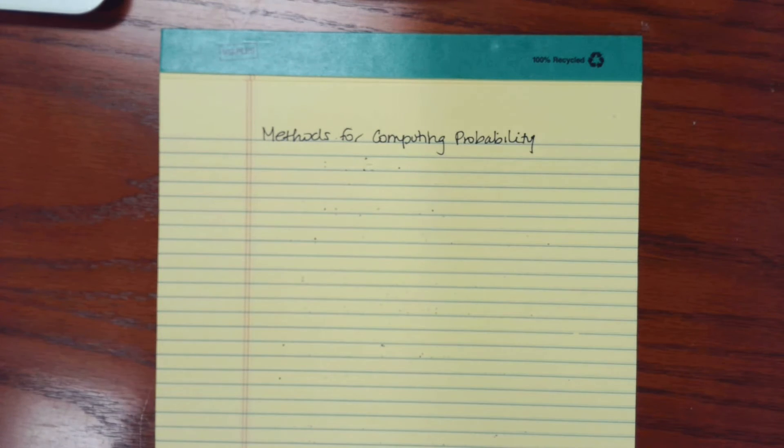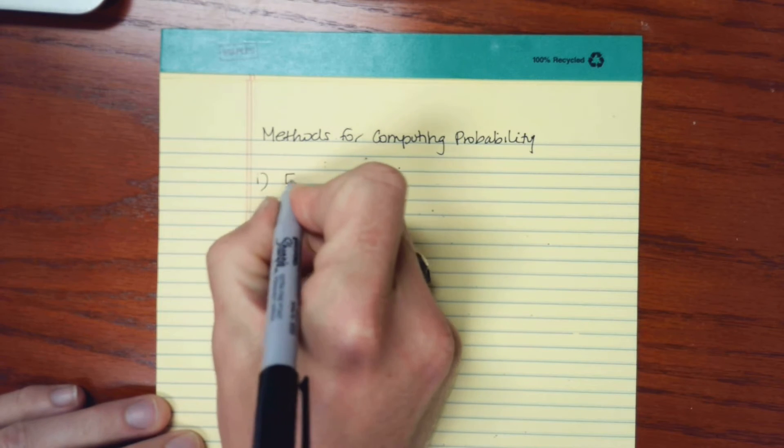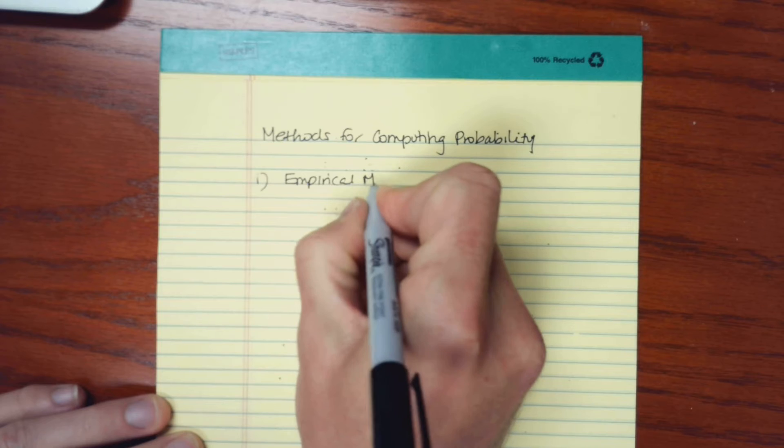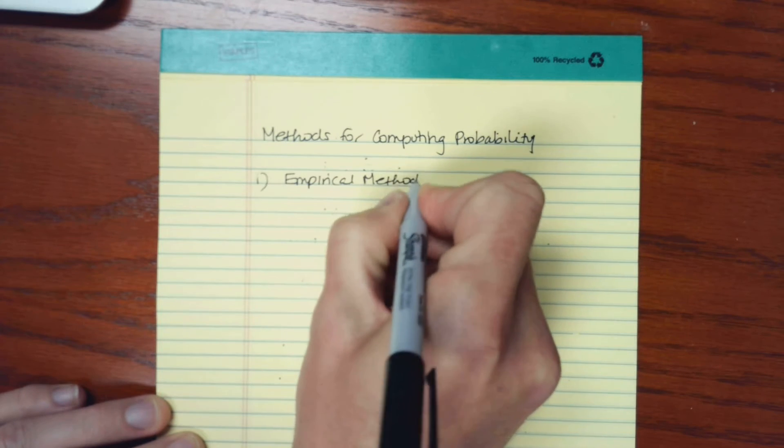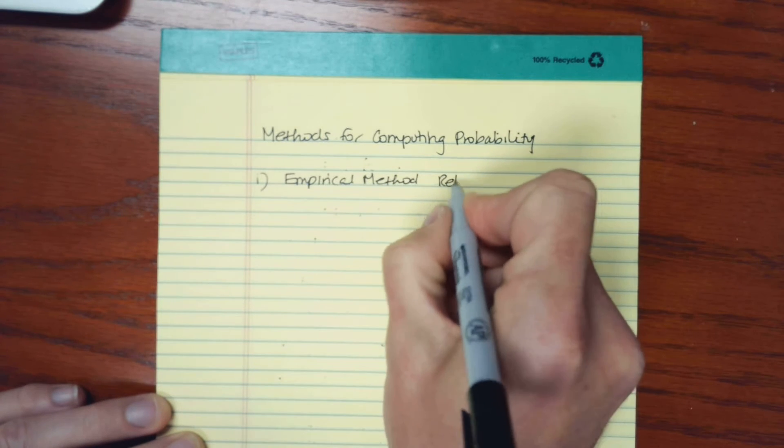So let's talk about some methods for computing probabilities. The first is called the empirical method. This is also known as a relative frequency method.